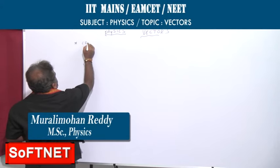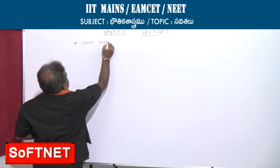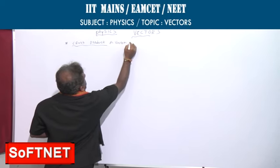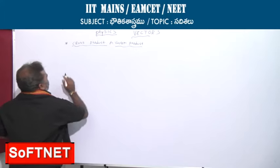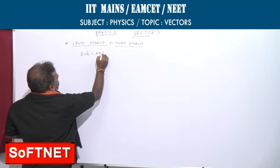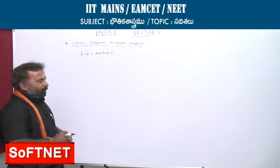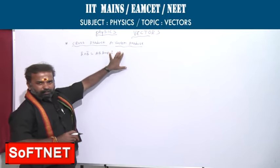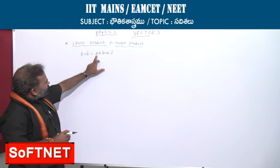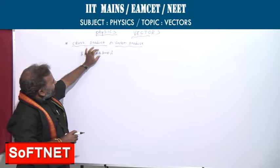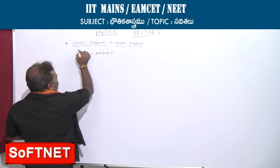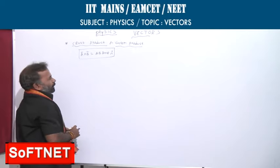We go for the cross product. Cross product of two vectors, also called vector product. The cross product of two vectors A bar cross B bar is equal to AB sine theta N cap. The cross product of two vectors is a vector whose magnitude is equal to the product of the magnitudes of A bar and B bar with the angle of sine between them. N cap gives the direction.